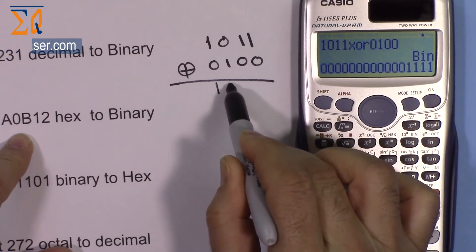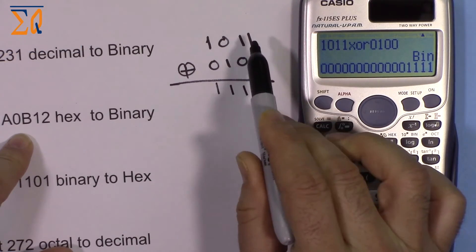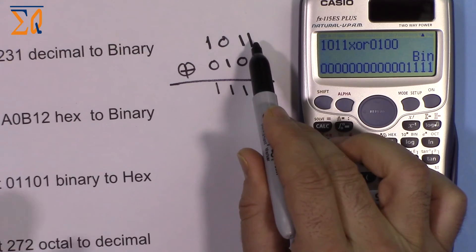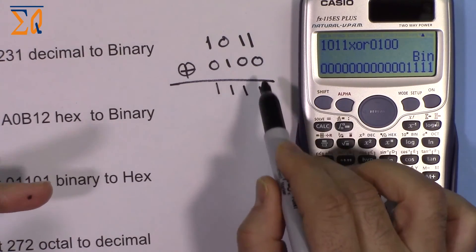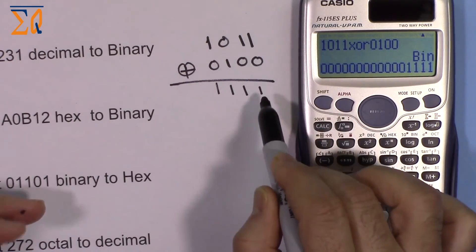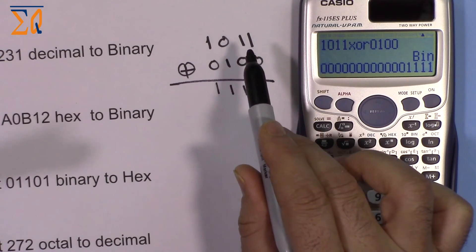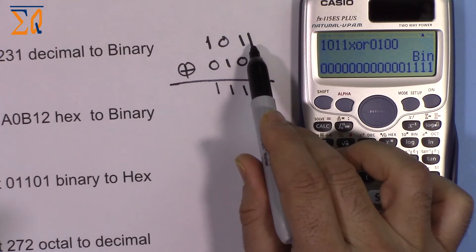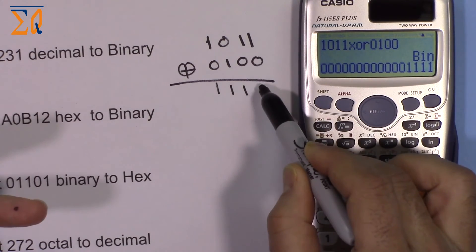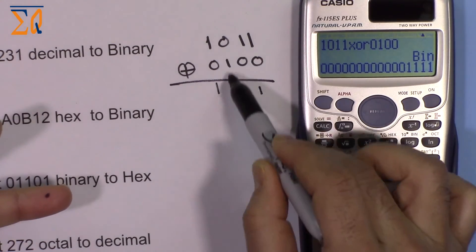The answer is 1111. Why? Exclusive OR means if both bits are 0 the answer is 0, if both are 1 the answer is 0. Only if exclusively one of them is 1, the answer is 1. Since each position has 0 and 1 or 1 and 0, we get 1111.